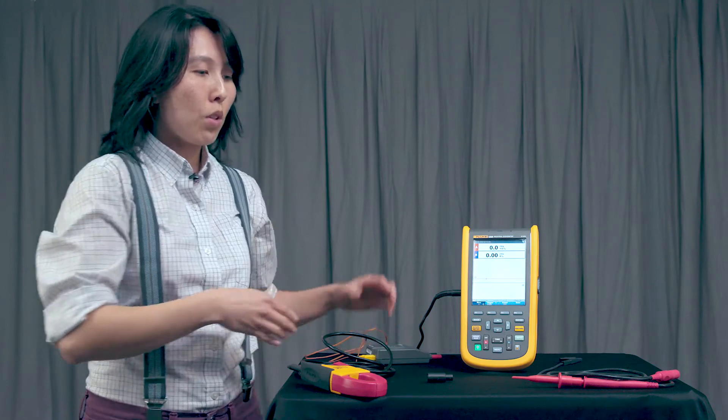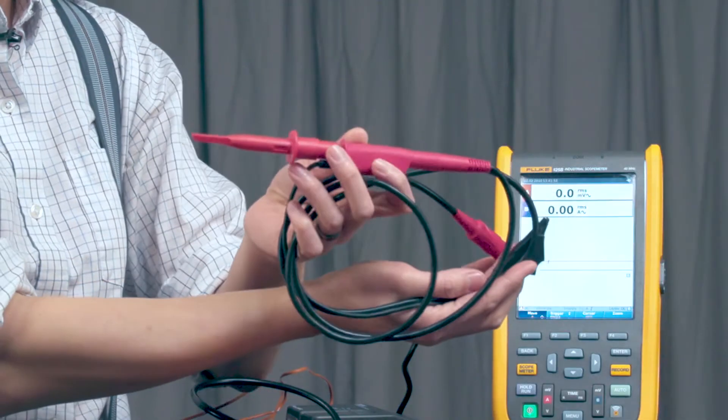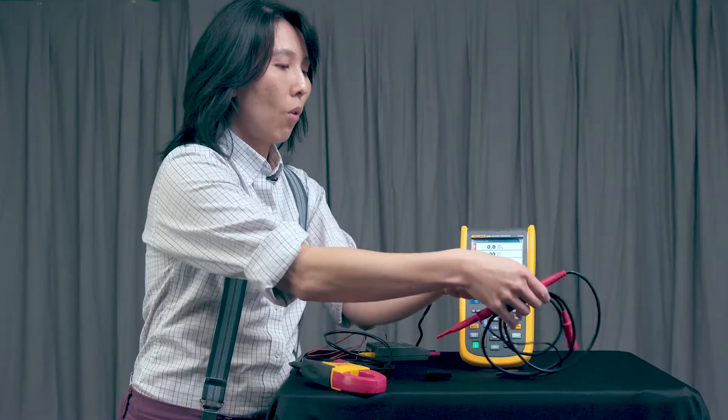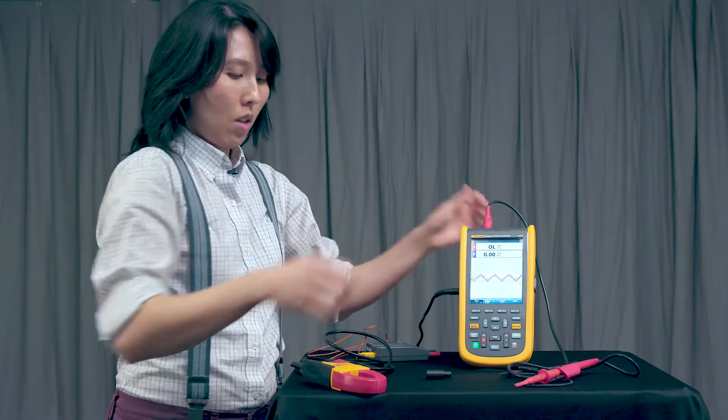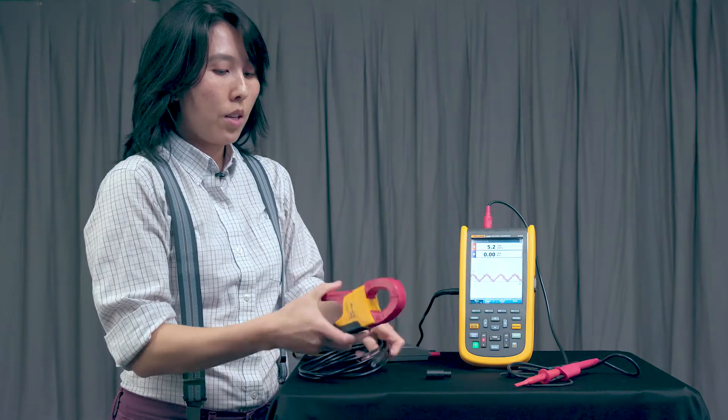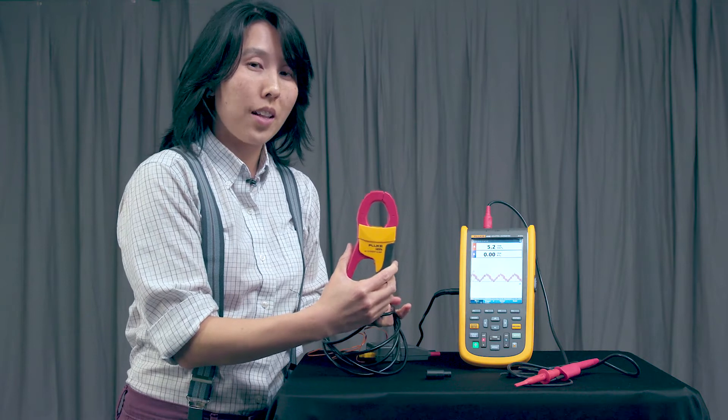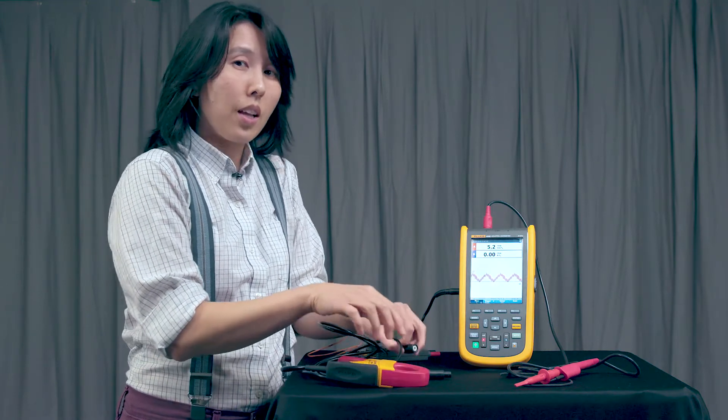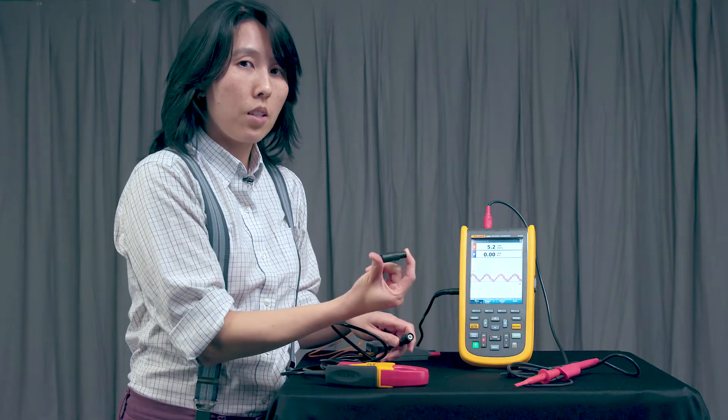So first off, in order to record voltage, we're going to use the STL120 probes. This is going to connect into channel A. We're also going to record current by using the I400S AC current clamp. And in order for this to get connected to the Scope Meter, we'll use the BB120 series adapter.